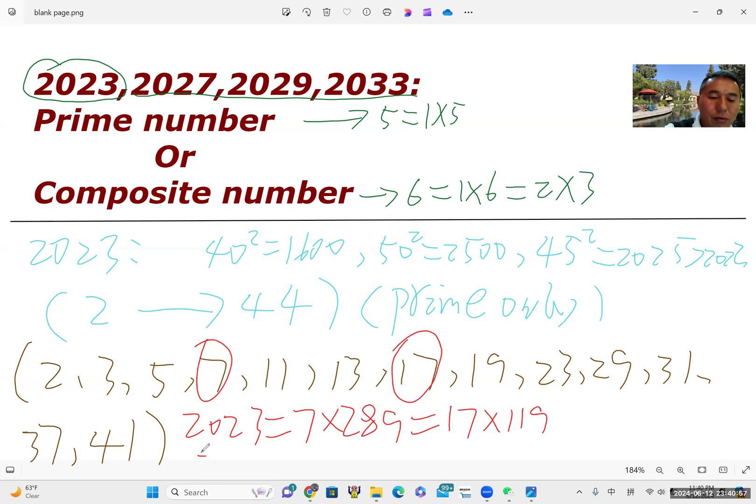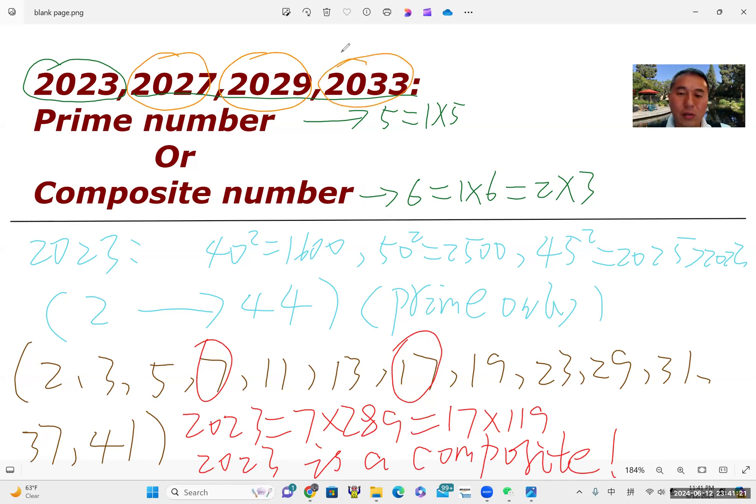Yeah. That means that 2023 is a composite. Yeah. For the left number, 2027, 2029, 2033. So if you are interested, you can use the same method to decide them yourself. Yeah.